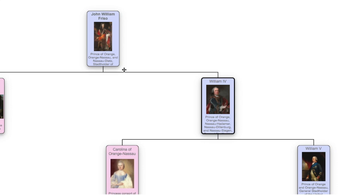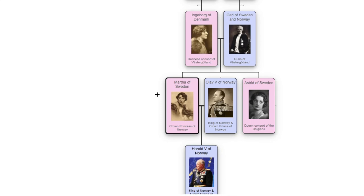Coming back to King Harald, he had a mother named Princess Martha of Sweden, who became the Crown Princess of Norway by marrying Olaf V. She died before he ascended to the throne.